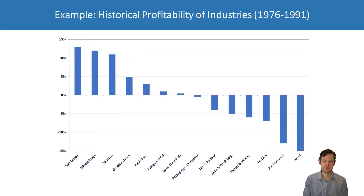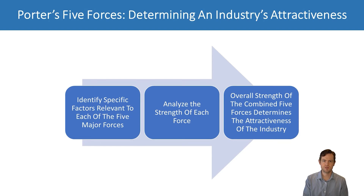Industries vary widely in the amount of profitability they have on average, with industries like the soft drink industry being very profitable and industries like the steel industry being very unprofitable. So what determines the profitability of an industry? We'll discuss Porter's five forces, identify specific factors in each force, analyze the strength of each force, and then the combined strength of these five forces will determine the overall attractiveness of the industry.